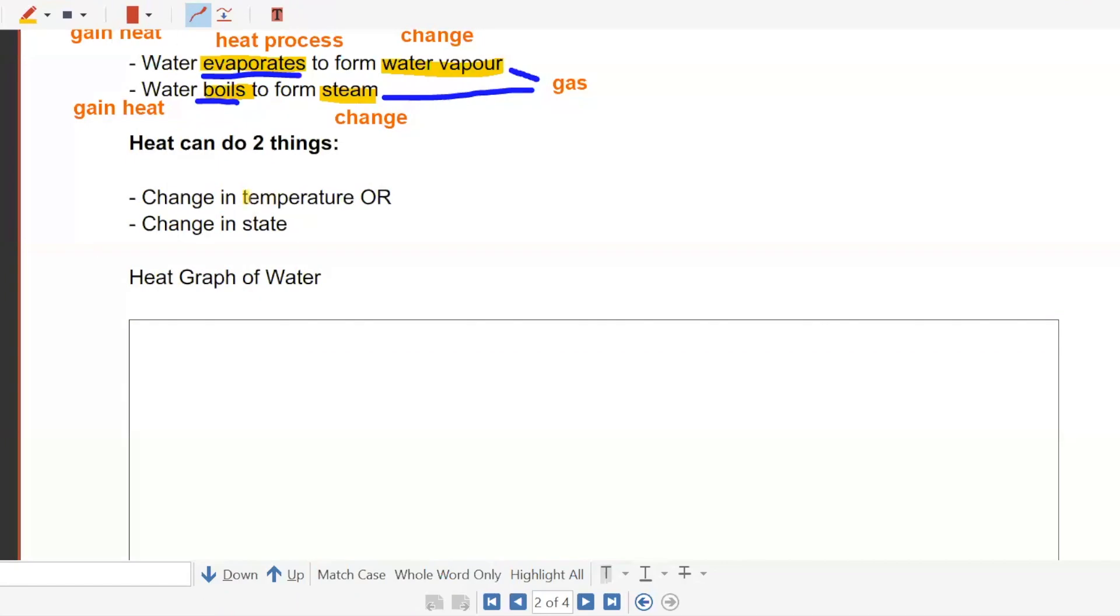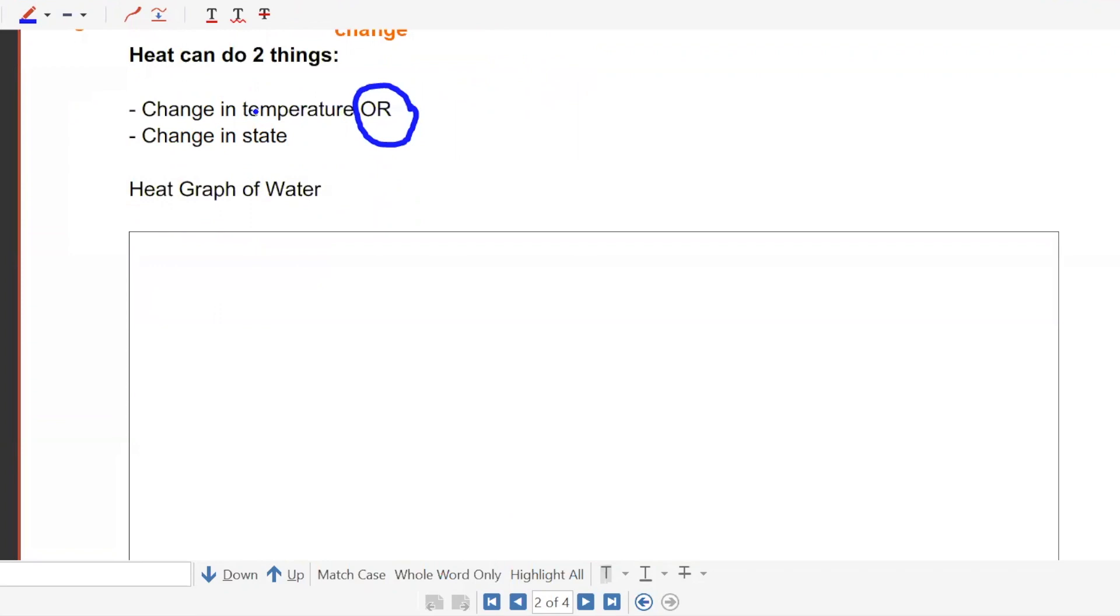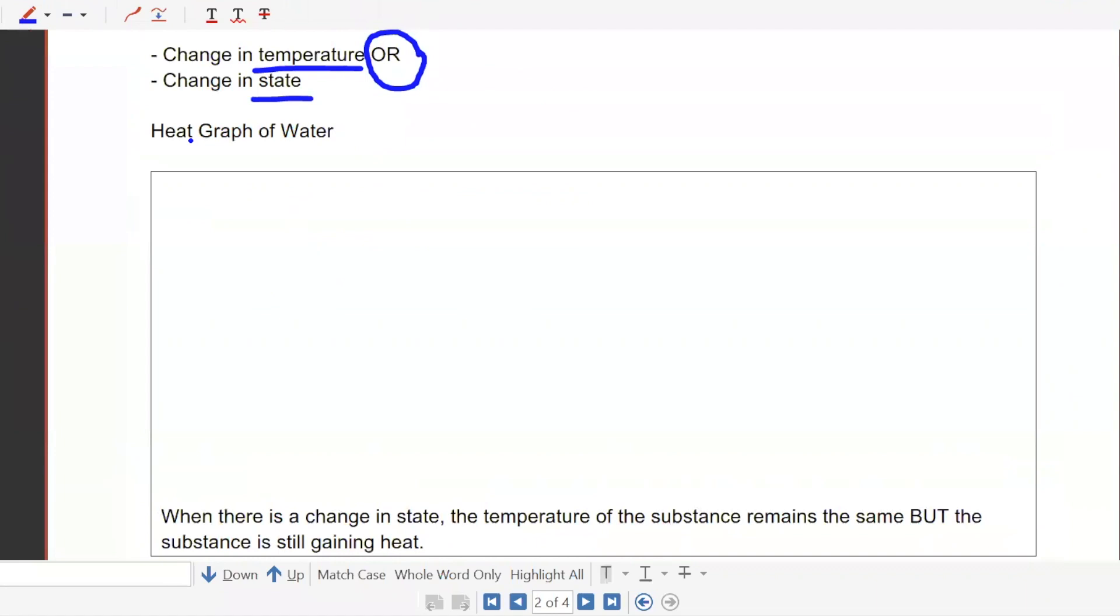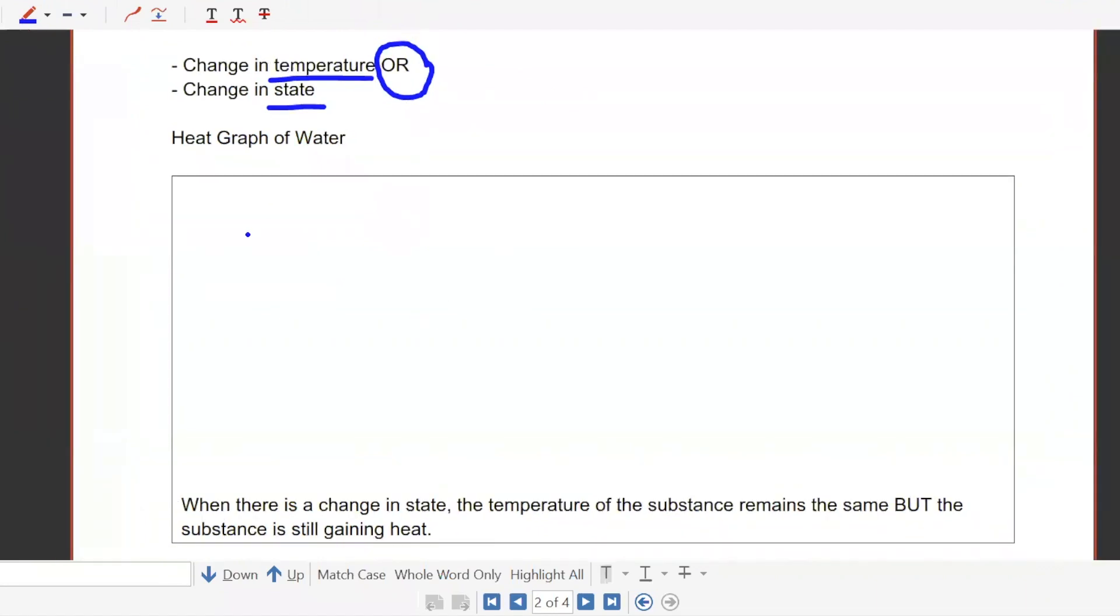So heat can do two things. Either you can change temperature or, I purposely state this big capital OR, make sure you know that I can only do one thing at one time. So you have to know you can either do change temperature or change state. Only one thing at one time. So I'm going to draw for you and illustrate what do I mean by this in a graph. The graph I'm going to draw.